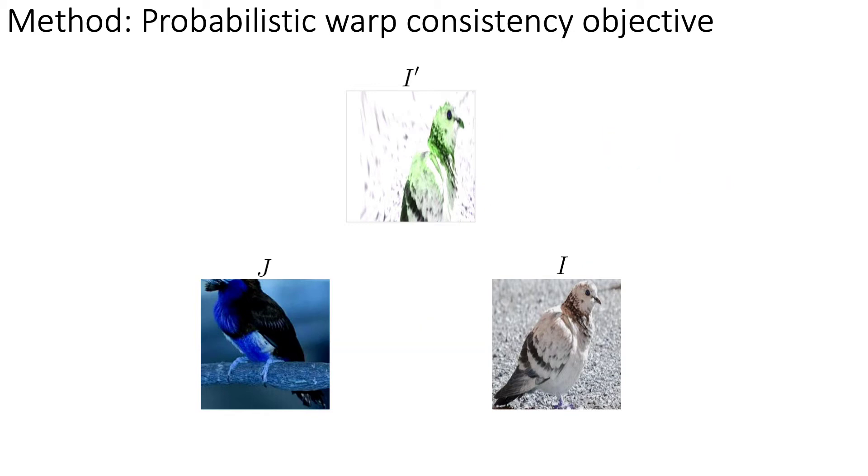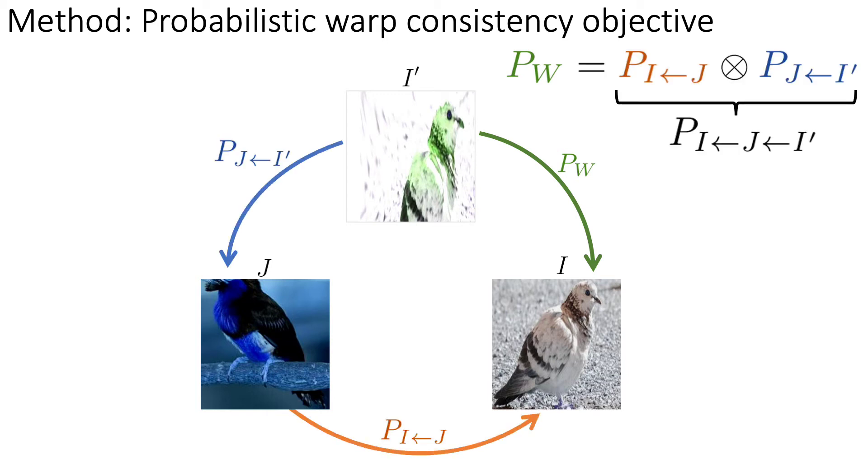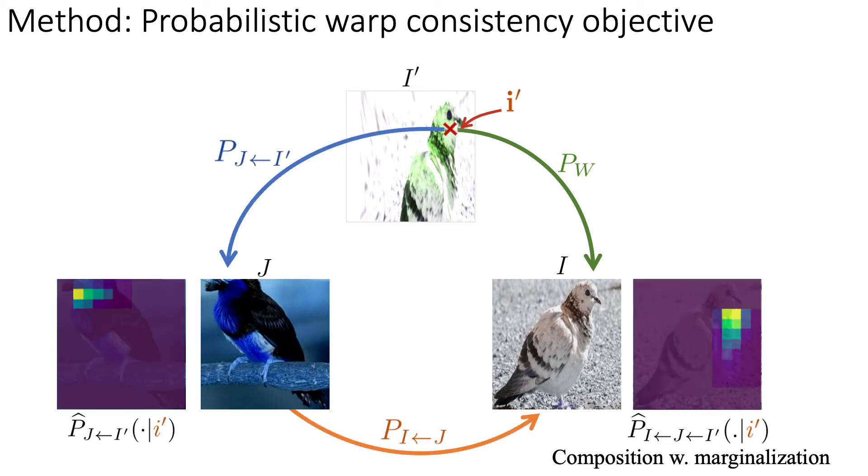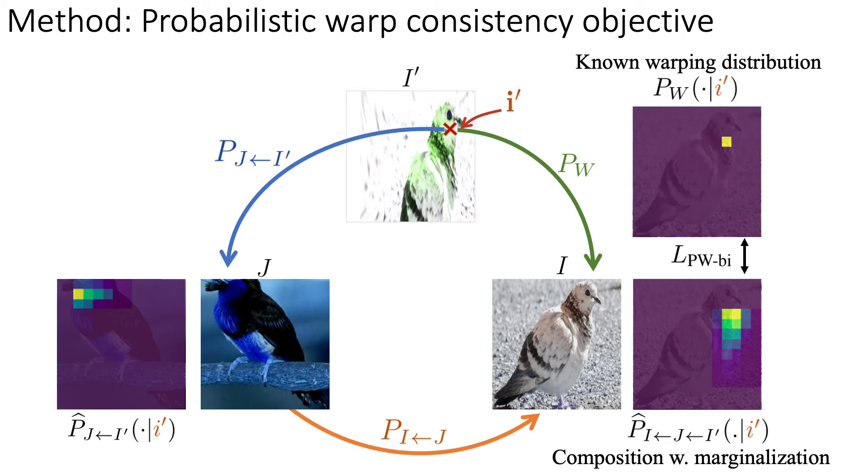From this image triplet we can derive a constraint which says that we should obtain the same probabilistic mapping by going through i' to i here, which is determined by Pw, or by taking the detour through image j. For a particular pixel of i', the resulting probabilistic distribution is obtained by marginalizing over the intermediate paths that link the pixel in i' to pixels in i through j. The loss is then obtained as the cross entropy between this composition and the known probabilistic mapping corresponding to Pw.